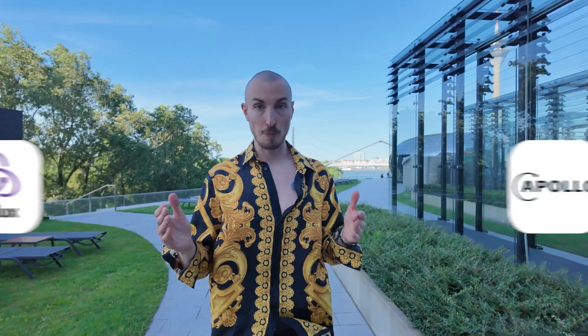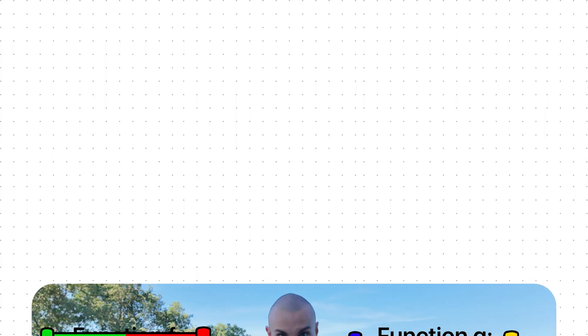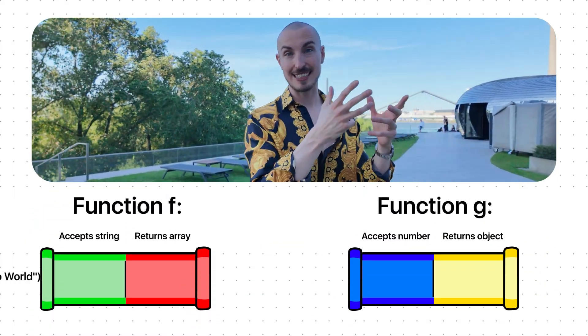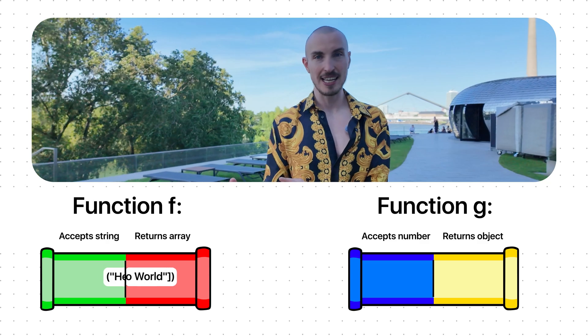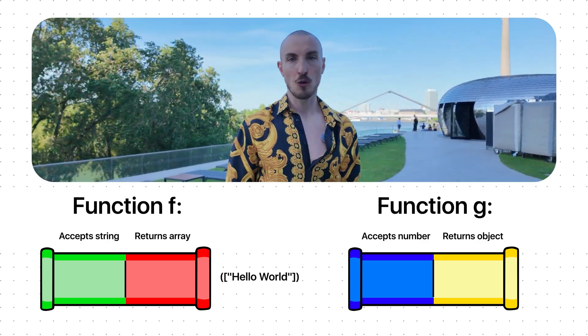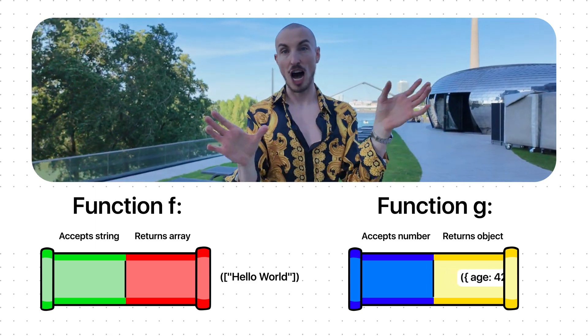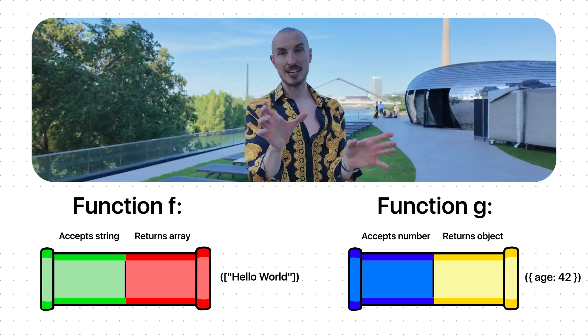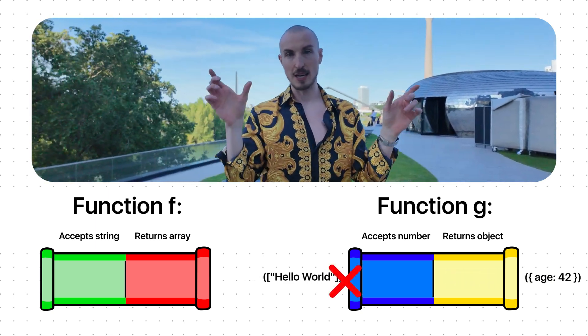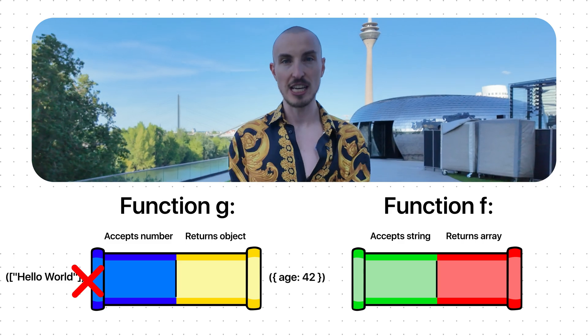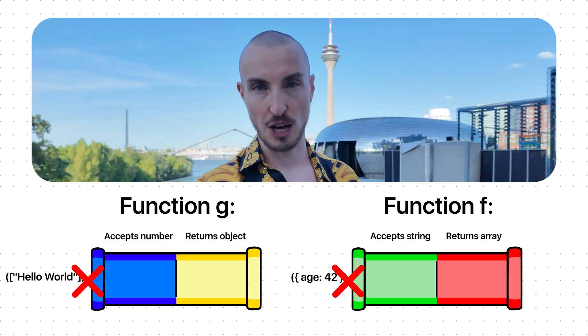If you want to compose functions, you need to make sure that the return values and the arguments of the functions you want to compose line up. For example, if you have a function that takes in a string and returns an array, you cannot compose that with another function that takes in a number and returns an object — because no matter how you interchange the functions, the return values of one never line up with the arguments of the other.